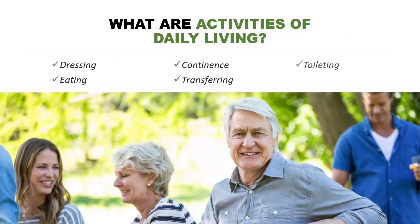When somebody wonders when they'll need care or when their policy will be triggered, the guideline is activities of daily living — toileting, bathing, continence, transferring, dressing, and eating. Think of them as the things you do when you wake up in the morning. If you're not able to perform two of those six things, you'll qualify for care under your policy. Make sure you let clients know that.